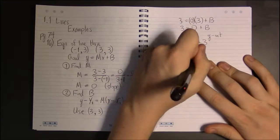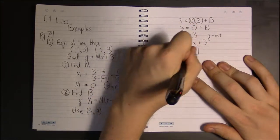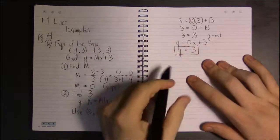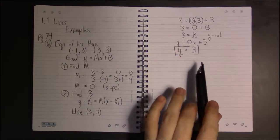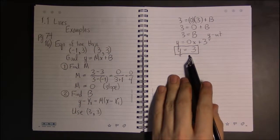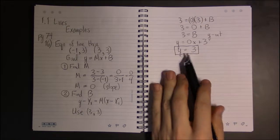0X + B, but we can simplify this because 0X is just 0, and 0 plus 3 is just 3, which gets us to a point of saying that this is actually a property of every horizontal line.